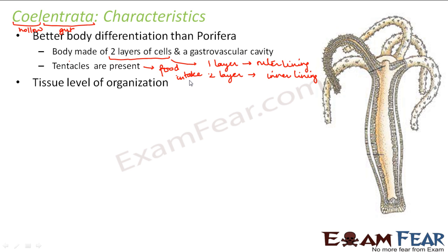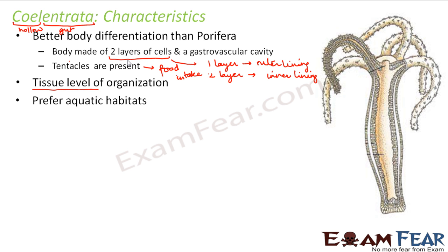Coelenterata have a tissue level of organization because cells actually group together to form tissue-like structures. Two layers of cells are formed — one layer forms the outer lining and one layer forms the inner lining. The cells are getting grouped together, so we can see tissues, and therefore we say it is at the tissue level of organization. They prefer aquatic habitats.